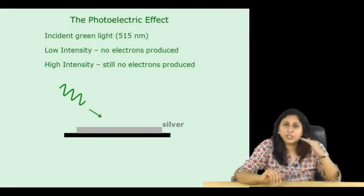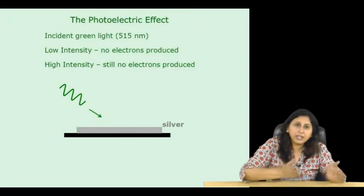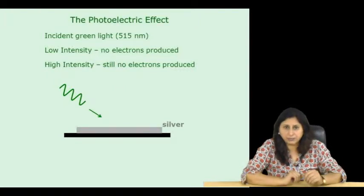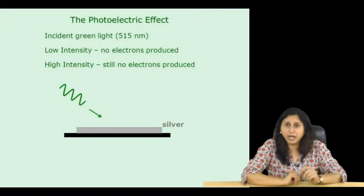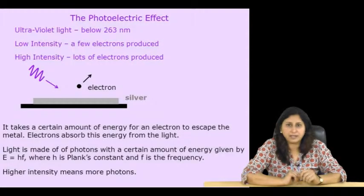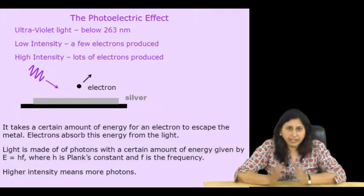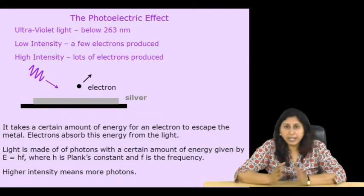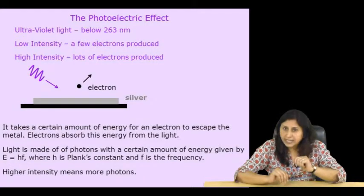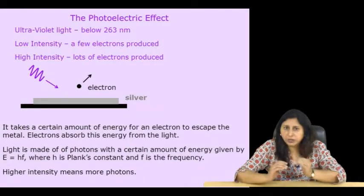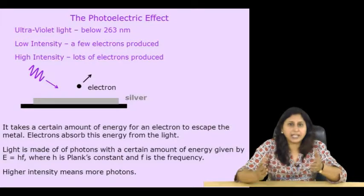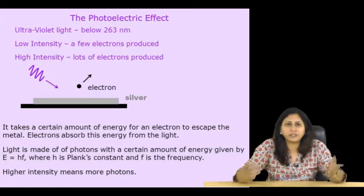So, we reduce the wavelength of light and go to the ultraviolet region of the spectrum. Now, we find that there is a cutoff at 263 nanometres. If we have a wavelength below that, we get electrons coming out of the metal. Now, at low intensity, we get few electrons produced and at high intensity, we get lot of electrons produced.